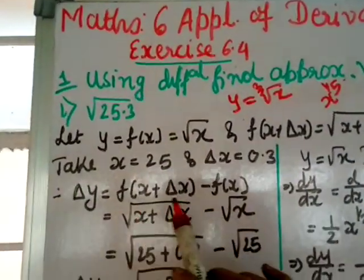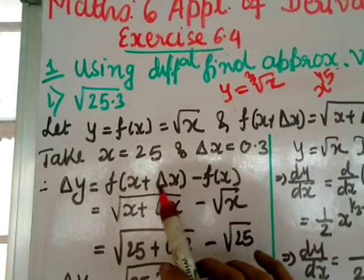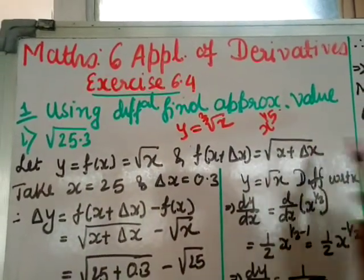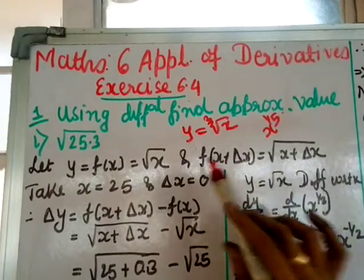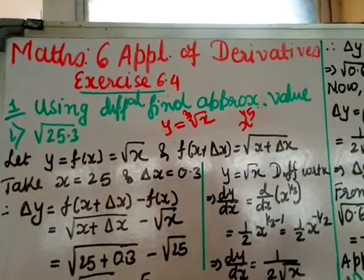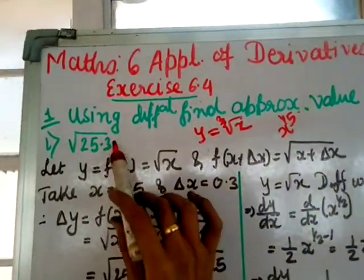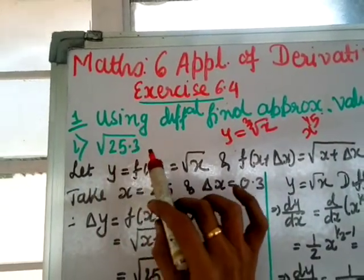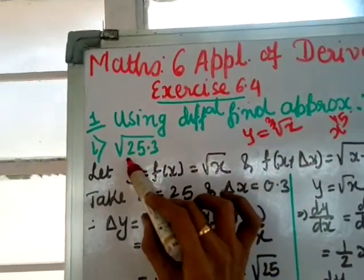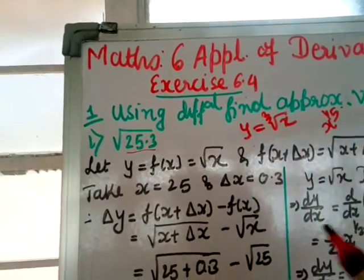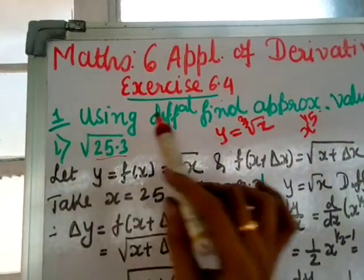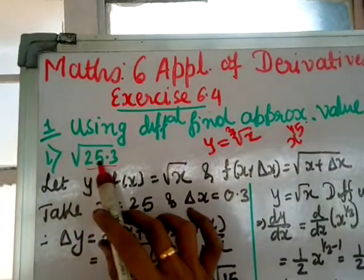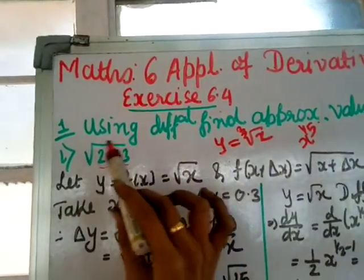Define y = f(x) = √x. You need to use this formula: f(x + δx) = √(x + δx). When the value given is 25.3, I have to find a number near to 25.3 whose square root is a perfect number.